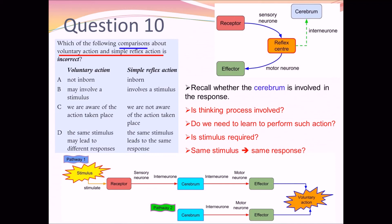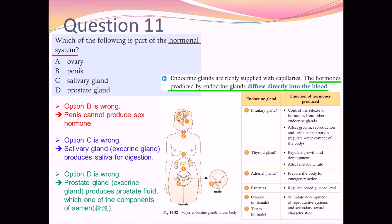Question 11 is the one question on the hormonal system: which of the following is part of the hormonal system? Refer to the diagram and the sentence: endocrine glands are richly supplied with capillaries, and the hormones produced by the endocrine gland diffuse directly into the blood, which carries them to the target organs. You can refer to the table — the pancreas secretes hormones into the blood, and the same applies to the pituitary gland, thyroid gland, adrenal gland, ovaries, and testes.